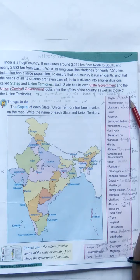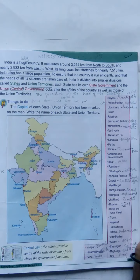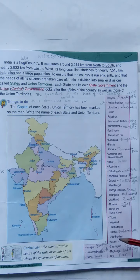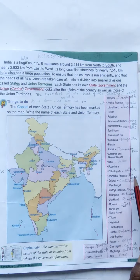Haryana — the capital is Chandigarh. Andhra Pradesh — the capital is Hyderabad. Uttarakhand — the capital is Dehradun. Jammu and Kashmir — the capital is Srinagar. Maharashtra — capital is Mumbai. Karnataka — capital is Bangalore. Kerala — capital is Thiruvananthapuram. Bihar — capital is Patna. Chhattisgarh — capital is Raipur. The capital city means the administrative center of the state or country from where the government functions. You have to find out the capitals.